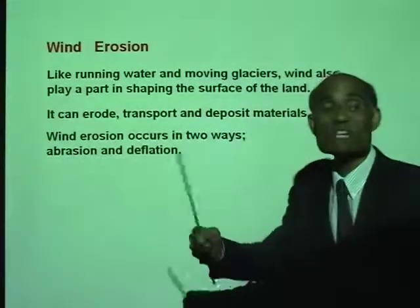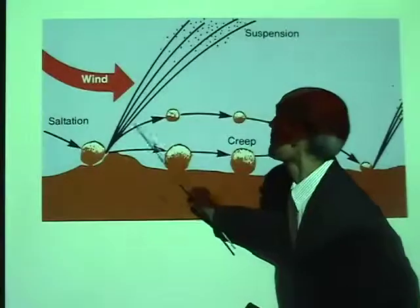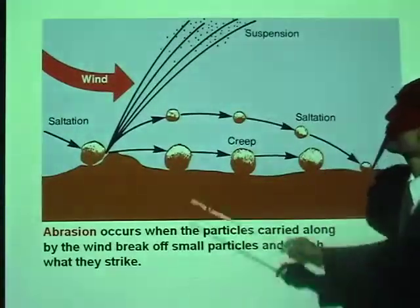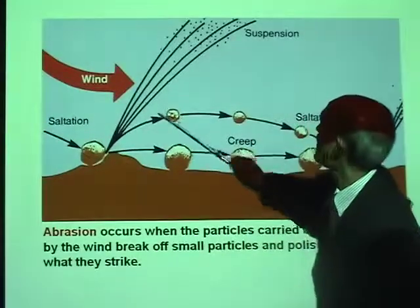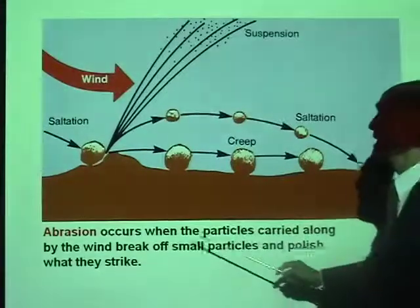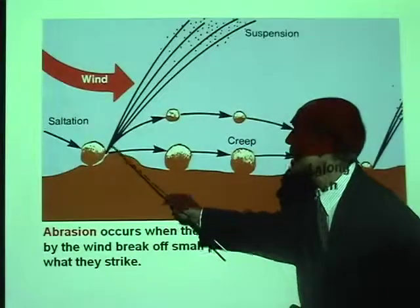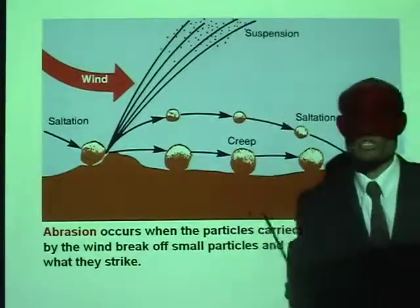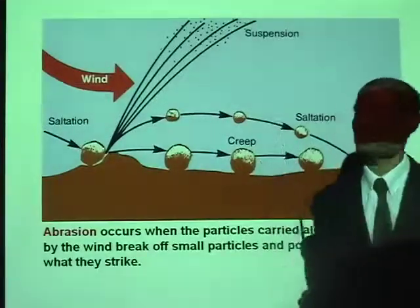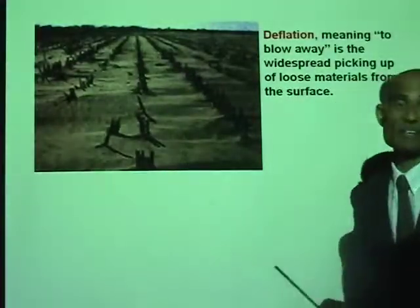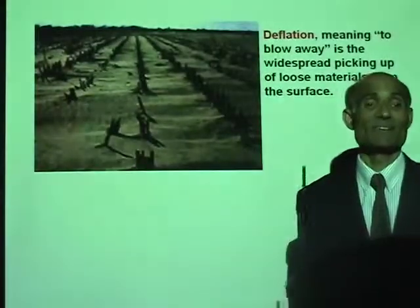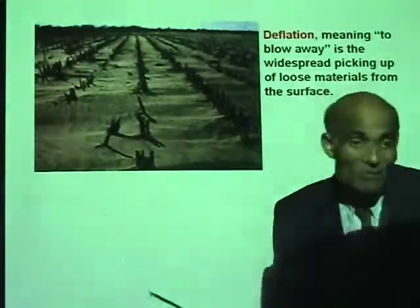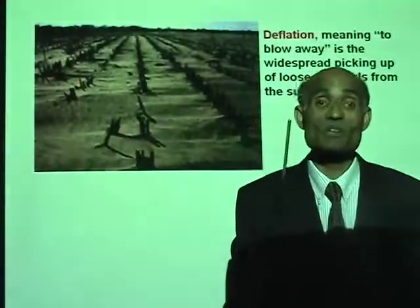Wind erosion occurs in two ways: abrasion and deflation. Like running water and moving glaciers, wind also plays a great part in shaping the surface of the earth — it can erode, transport, and deposit materials. Abrasion occurs when particles carried along by the wind break off small particles and polish what they strike. Deflation means to blow away — if there is a very dry land with a lot of loose soil and a great big wind blows, everything gets blown away. A great big dust storm is an example of deflation.